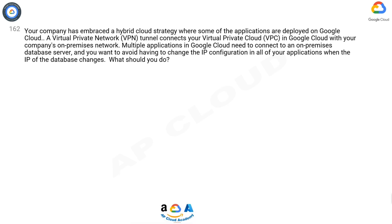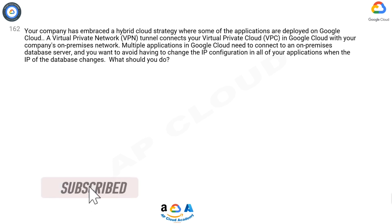Question 162. Your company has embraced a hybrid cloud strategy where some of the applications are deployed on Google Cloud. A virtual private network (VPN) tunnel connects your Virtual Private Cloud (VPC) in Google Cloud with your company's on-premises network. Multiple applications in Google Cloud need to connect to an on-premises database server, and you want to avoid having to change the IP configuration in all of your applications when the IP of the database changes.